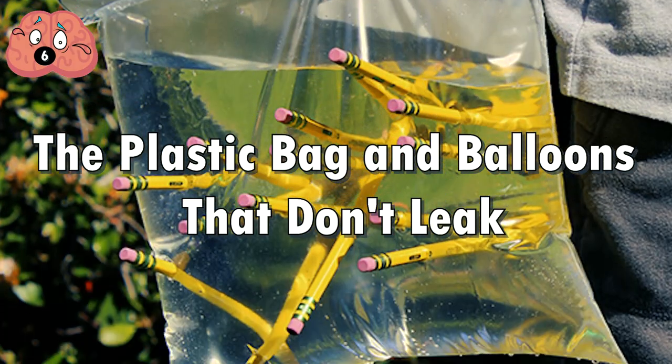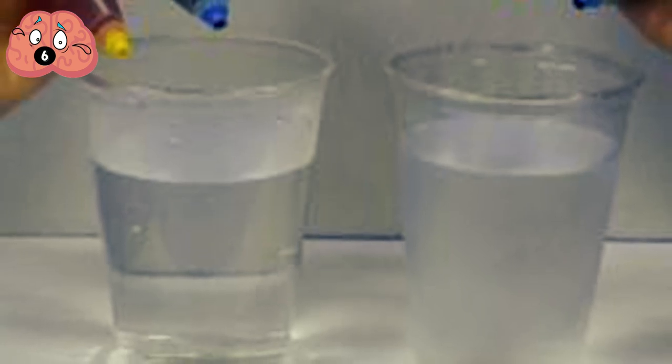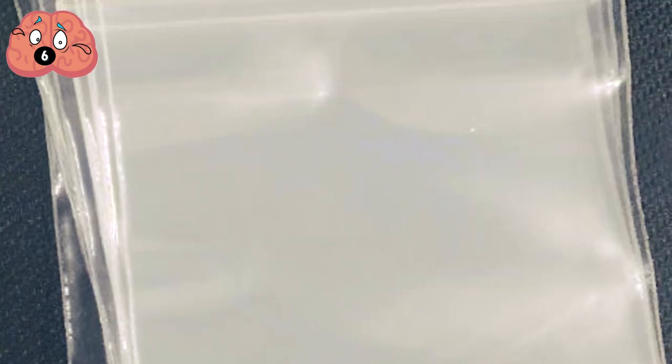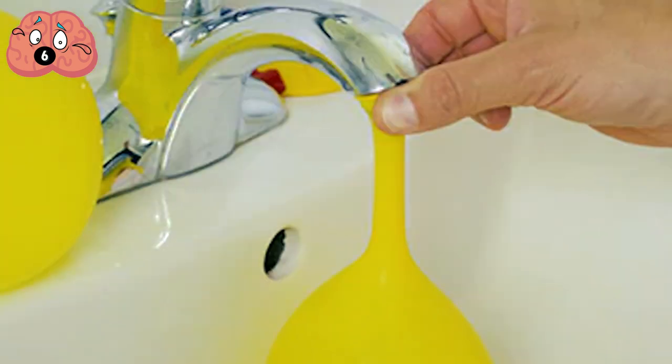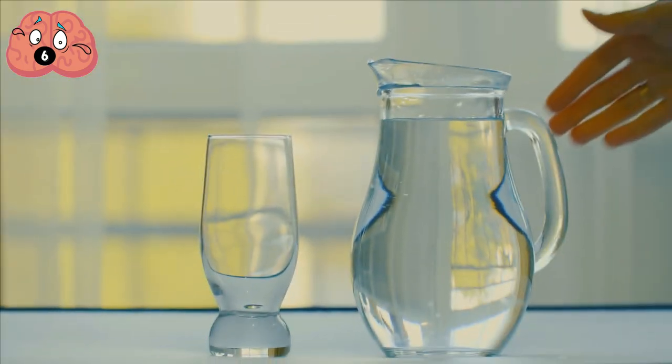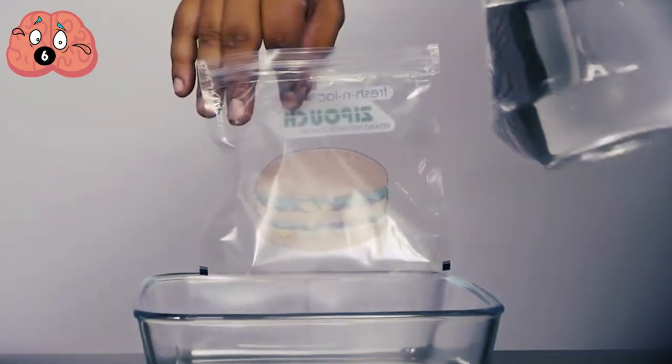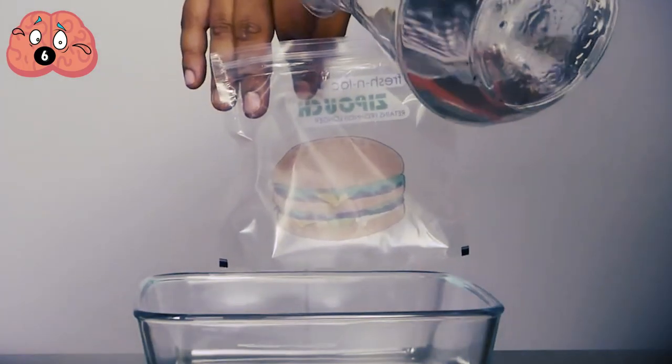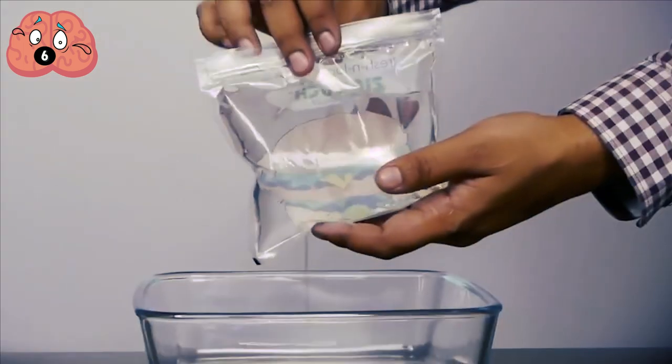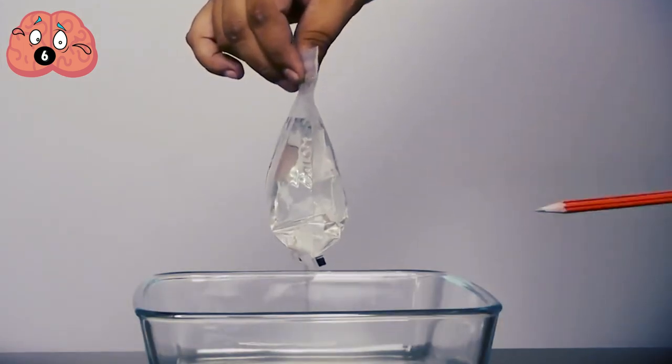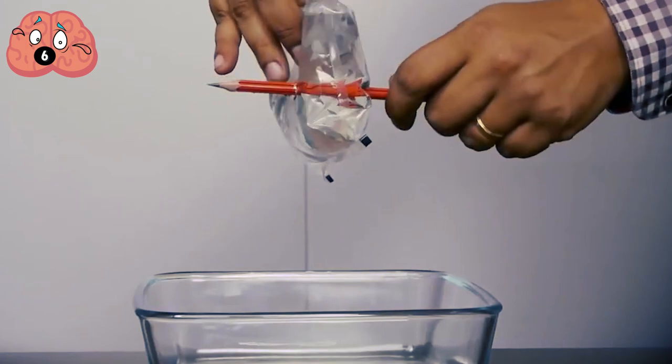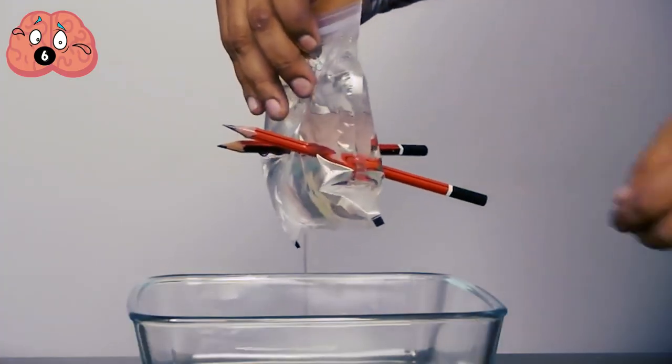Number 6. The plastic bag and balloons that don't leak. I think it's time that we moved on from glasses. For these next two tricks, I will be using plastic and rubber with water. The first one requires a sealable plastic bag, some water, and sharpened pencils. Fill the bag halfway with water and then seal it well. Poke a pencil into it and all the way through the other side. Feel free to add more pencils if you like. You expect it to burst, right? But it didn't.